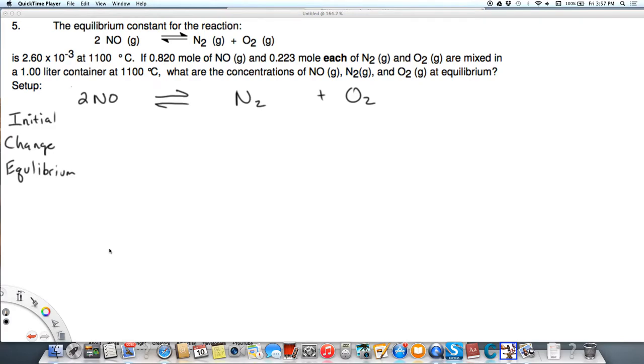Okay, we need to solve this equilibrium problem. We're given the equation and the equilibrium constant. So of course we would remember that N2 times the concentration of O2 over the concentration of NO squared is going to equal our constant, which is given as 0.00260.